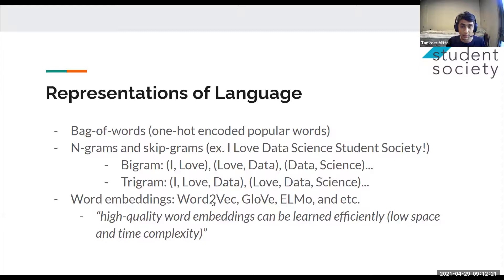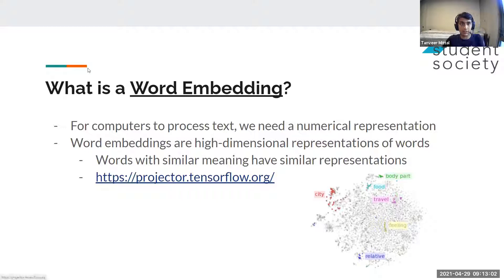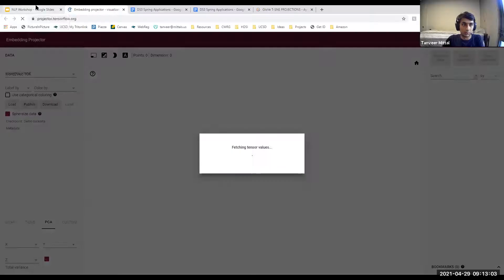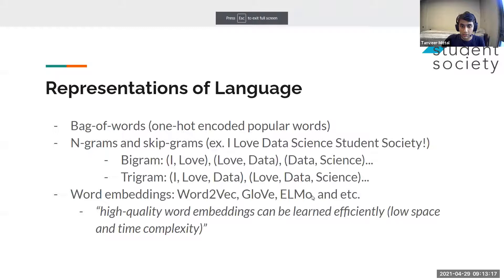Last but not least is word embeddings. For computers to process text we need a numerical representation. Word embeddings are a high-dimensional vector representation of words — the idea is to convert a word to a 100-dimensional or 300-dimensional vector that has really useful properties for machine learning. The most common pre-trained word embeddings used in the industry are Word2Vec, GloVe, and ELMo, among others. Here we're looking at a point cloud for Word2Vec.